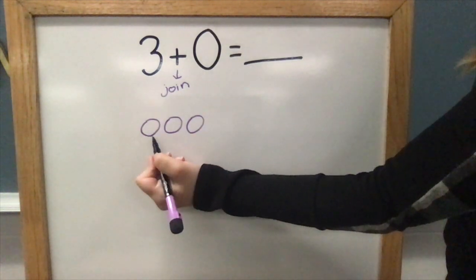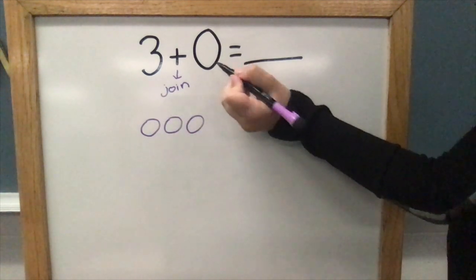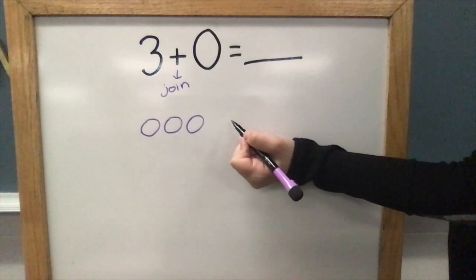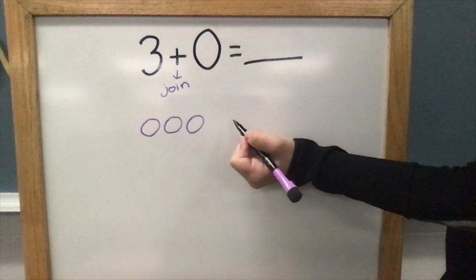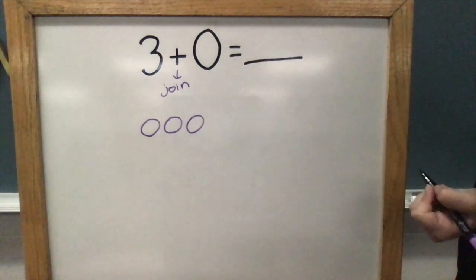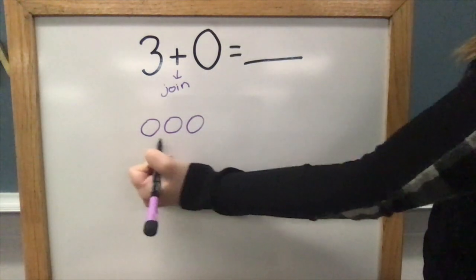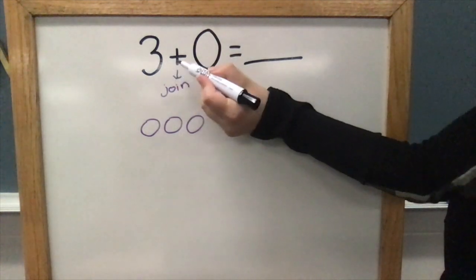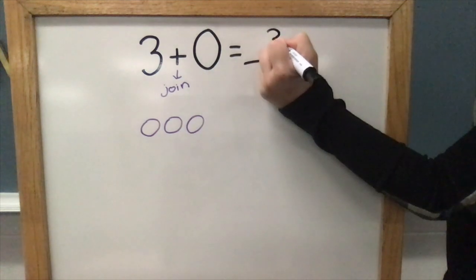I need to join that group of three with zero. How many counters should I draw to show zero? You're right. I don't need to draw any counters because zero means none. That means all that I have is the three I started with. So, three plus zero equals three.